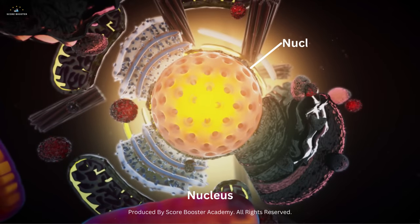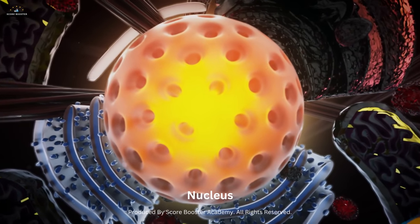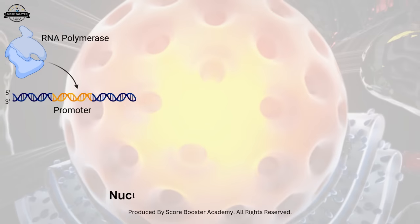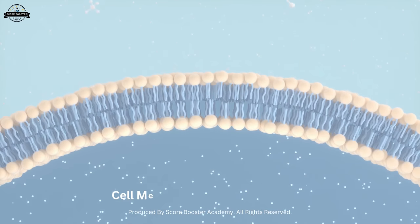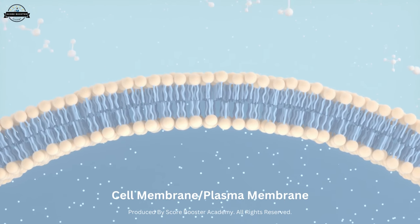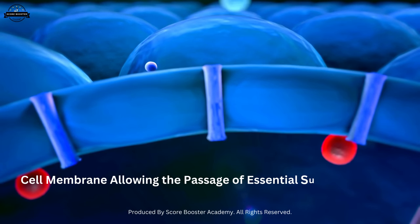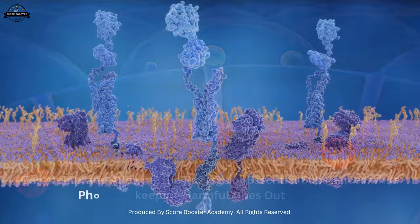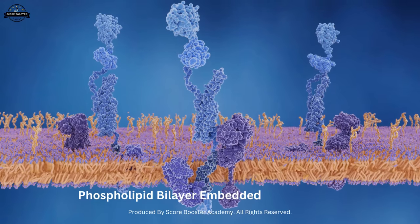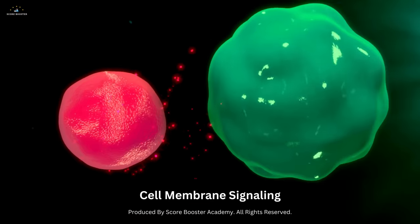The nucleus houses the cell's DNA, which contains the instructions for the cell's activities. It is like the control center, coordinating and regulating cellular functions by transcribing DNA into RNA and directing protein synthesis. The cell membrane is a vital component of cells — a selectively permeable barrier that allows the passage of essential substances while keeping harmful ones out. The membrane is composed of a phospholipid bilayer embedded with proteins that aid in transportation, signaling, and cell adhesion.